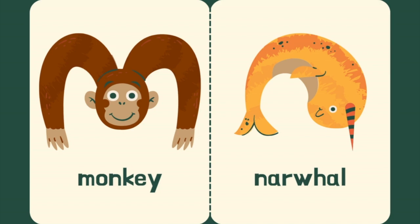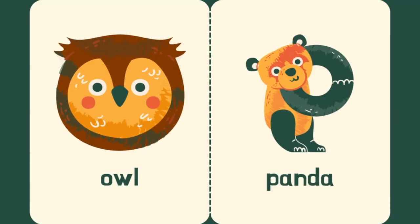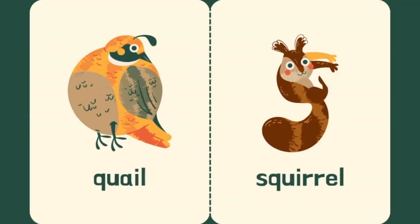N is for Nervin. O is for Owl. P is for Panda. Q is for Quail.